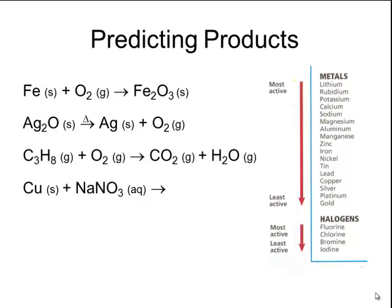An activity series ranks all of the metals from most active to least active. To figure out the products of copper and sodium nitrate, I need to find copper and sodium on my activity series. If the single element is close to the top of the activity series, it will kick out or displace the metal that's in the compound. In this situation, copper is actually lower than sodium on my activity series, which means copper is less reactive than sodium, and so no reaction will occur. The metal that is more reactive is already part of the compound, and copper is not reactive enough to cause a displacement.